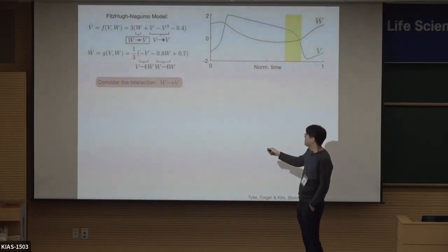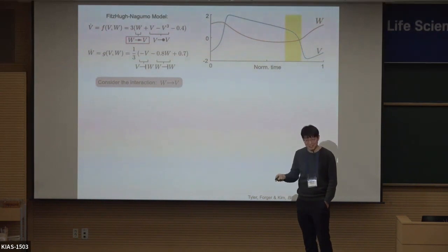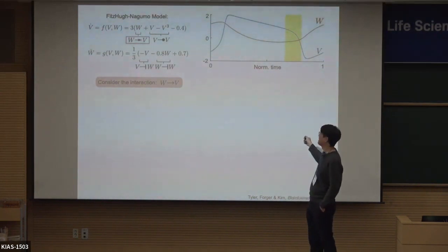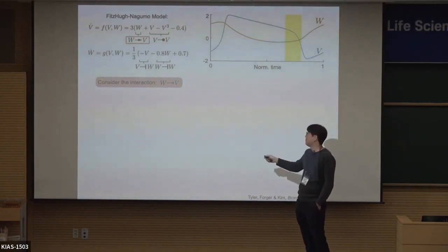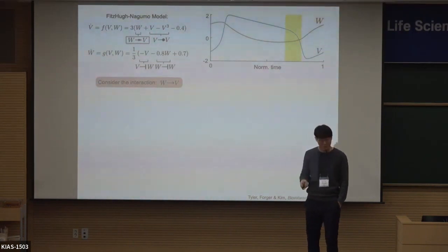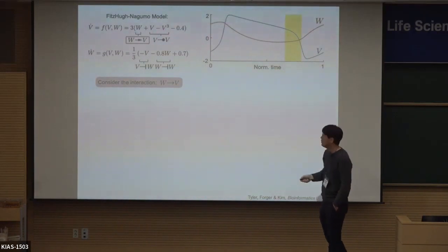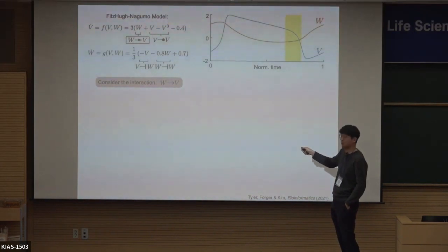Actually, w regulates v-dot, not v directly. So maybe as w increases, v-dot increases? But as w increases, v-dot can decrease. The reason is that v-dot is not only determined by w but also by the v term — there is a masking by v. So we have to investigate the relationship between w and v-dot while removing this masking effect from v.